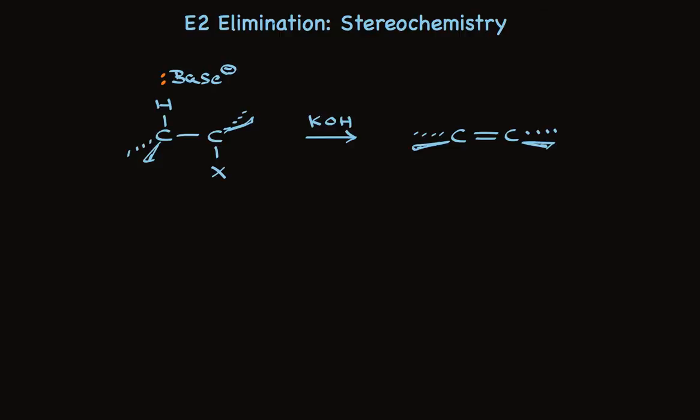We can easily follow this by arrow pushing. In the standard way, a pair of electrons from the base bonds with a proton, this sigma bond pair of electrons makes a pi bond, and this sigma bond pair of electrons leaves with the halide.